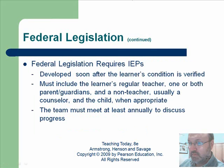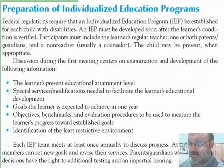An IEP — individual education plan — is developed when a child is found to have a disability or learning need that prevents them from accessing the curriculum or school like others. It must include the learner's regular teacher, one or both parent/guardians, and a non-teacher such as a counselor. The team must meet at least annually to discuss the student's progress.